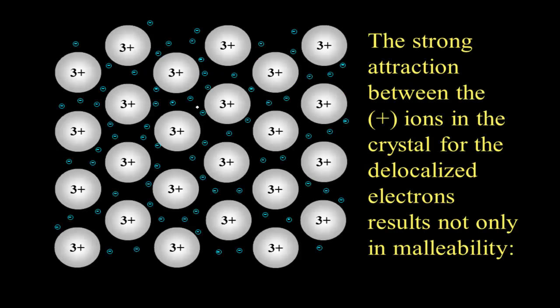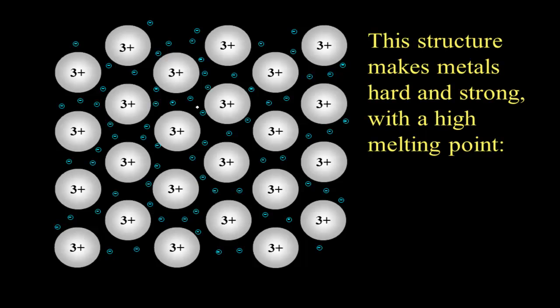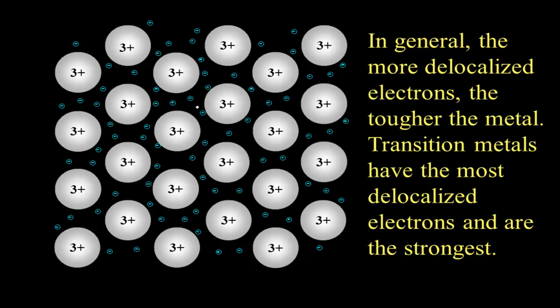All right, back to metallic crystals. So why would this very strong attraction result in other properties? How about their strength and high melting point? Well, the atoms want to stay together. They're very attracted to the sea of electrons. And so therefore, the higher the amount of valence electrons given to the sea of electrons, the tougher the metal, the harder it is, and the higher the melting point.